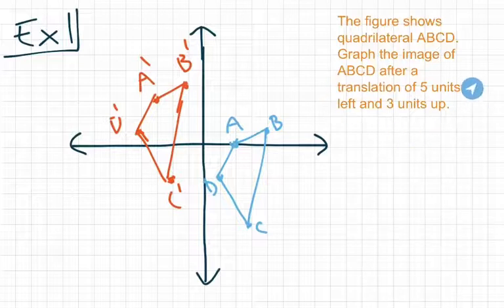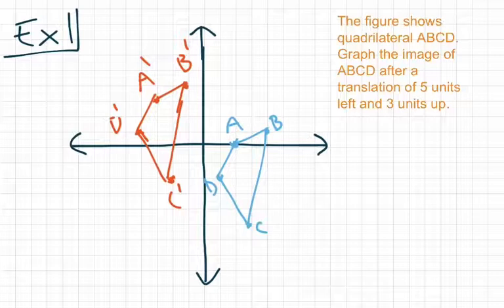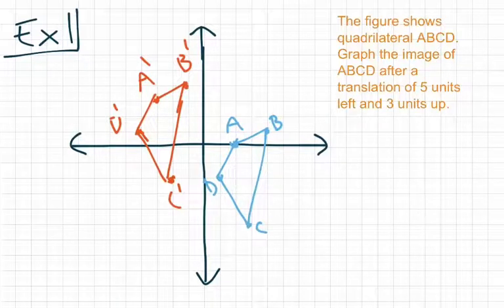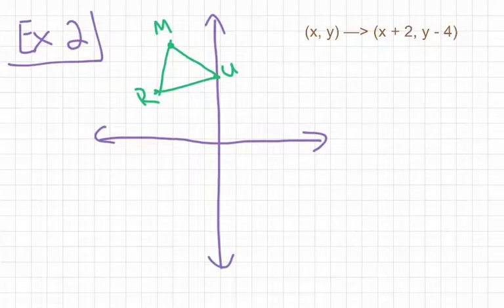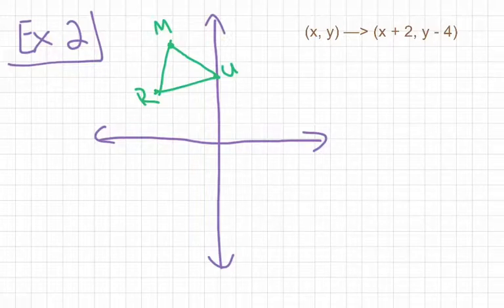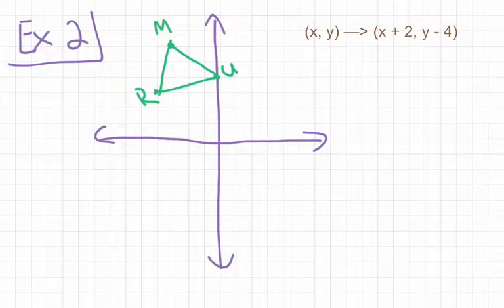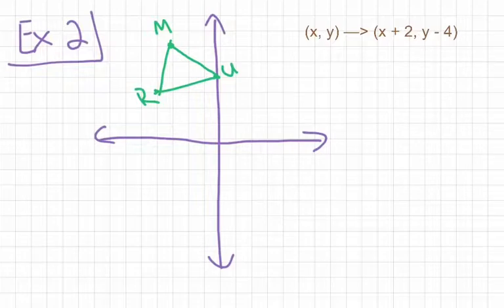Now, the rule that we use here was written out in words. There are other ways of communicating the rule for translations. So let's take a look at another one of those ways. For our second example, we are given triangle MUR. And we're given a rule this time that's written out more mathematical. This one tells us that x comma y goes to—this arrow right here, we pronounce that goes to—x plus 2 comma y minus 4. So essentially what we're going to do is take each x value and add 2 to it, and each y value and subtract 4 from it.